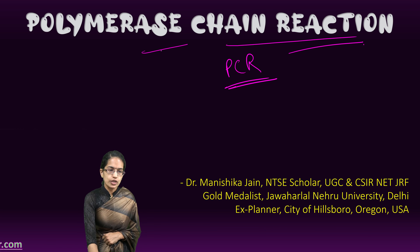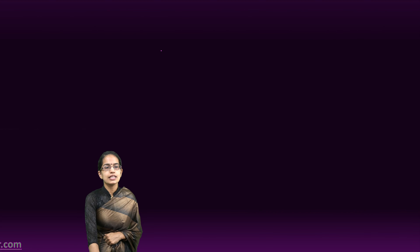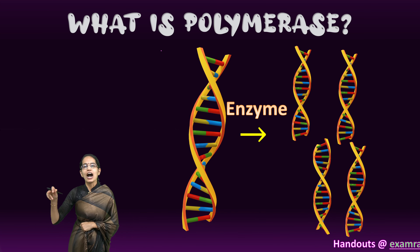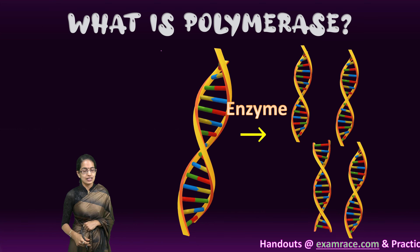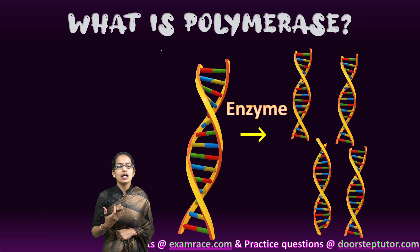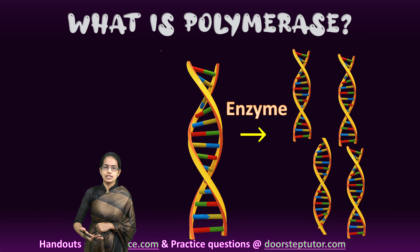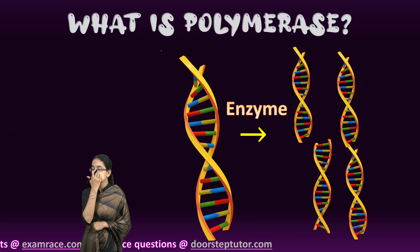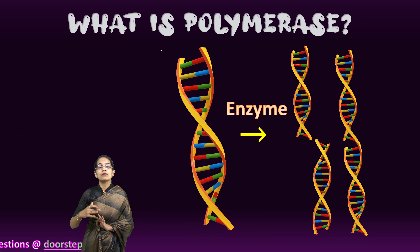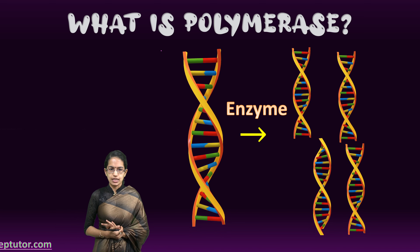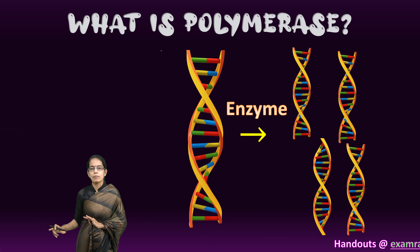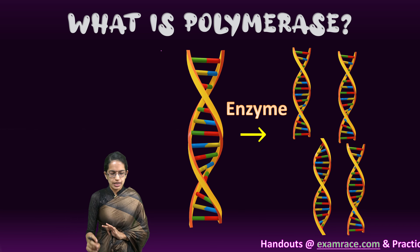Let's first talk about what polymerase is, then what a chain reaction is, and then understand how polymerase chain reaction occurs. Polymerase is very simple to understand: we have a DNA, and with the presence of the enzyme Taq polymerase, we create multiple copies of that DNA. So from one copy we are creating multiple copies — this is polymerase.